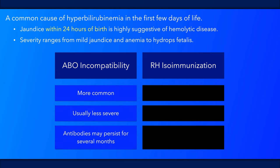The severity of hemolysis is generally more mild with ABO incompatibility, but is unpredictable because of the amount of circulating maternal antibodies. These antibodies may persist for several months and cause recurring or persistent anemia.